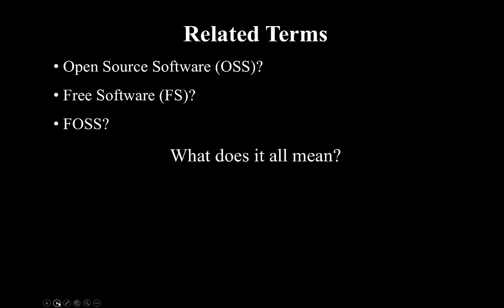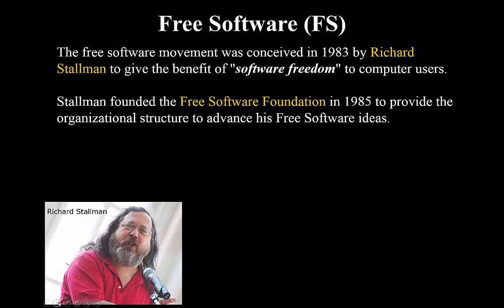There are some related terms: open source software, free software, and FOSS. Starting with free software, the free software movement was conceived in 1983 by Richard Stallman to give the benefit of software freedom to computer users. Stallman founded the Free Software Foundation in 1985 to provide the organizational structure to advance his free software ideas.